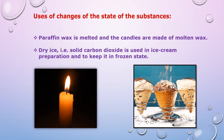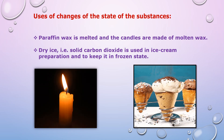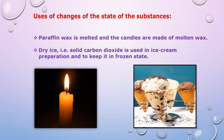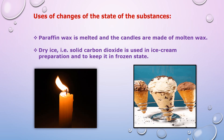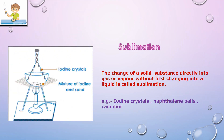We have seen the uses of changes of state of substances — how we can use change of state in our daily life. We also understood that solid substances can directly change into vapour or gas without changing into liquid. This is called sublimation, and we have seen examples of it.